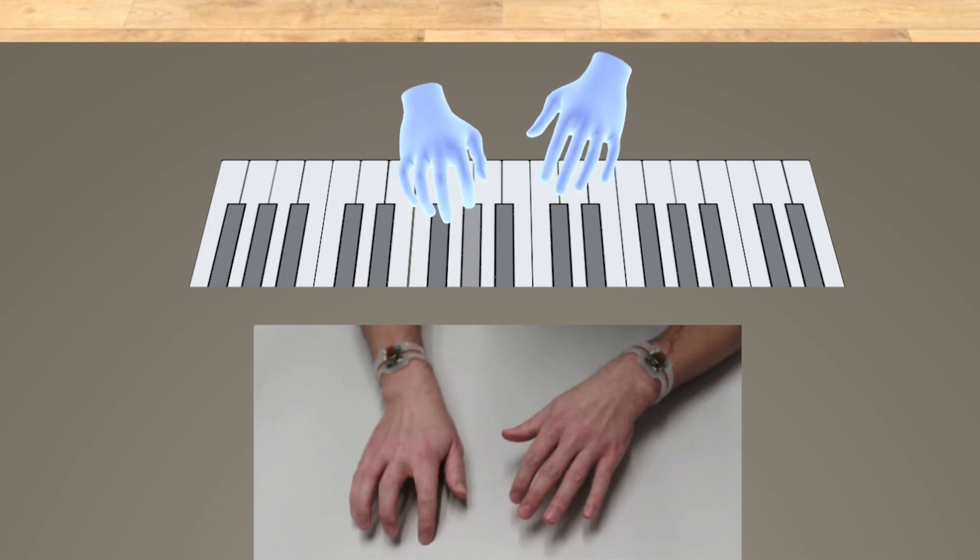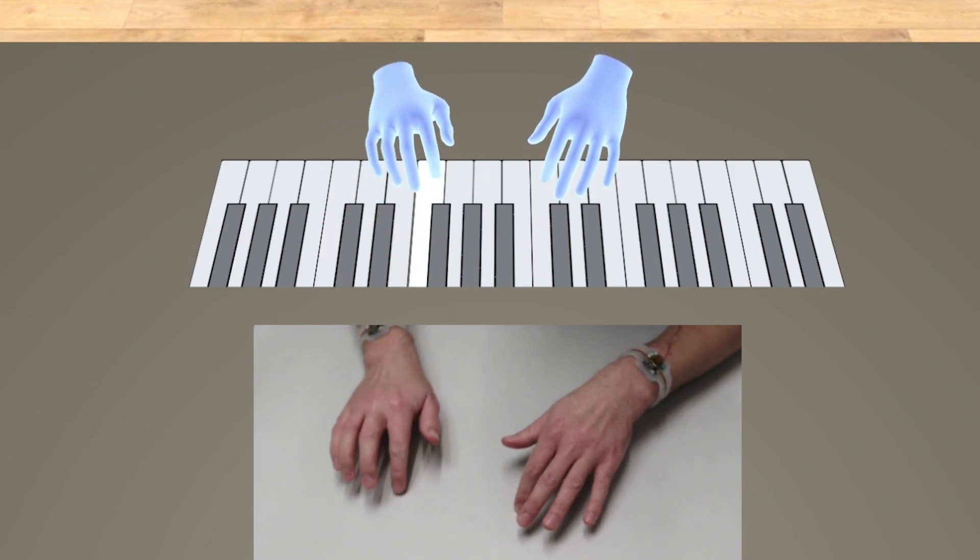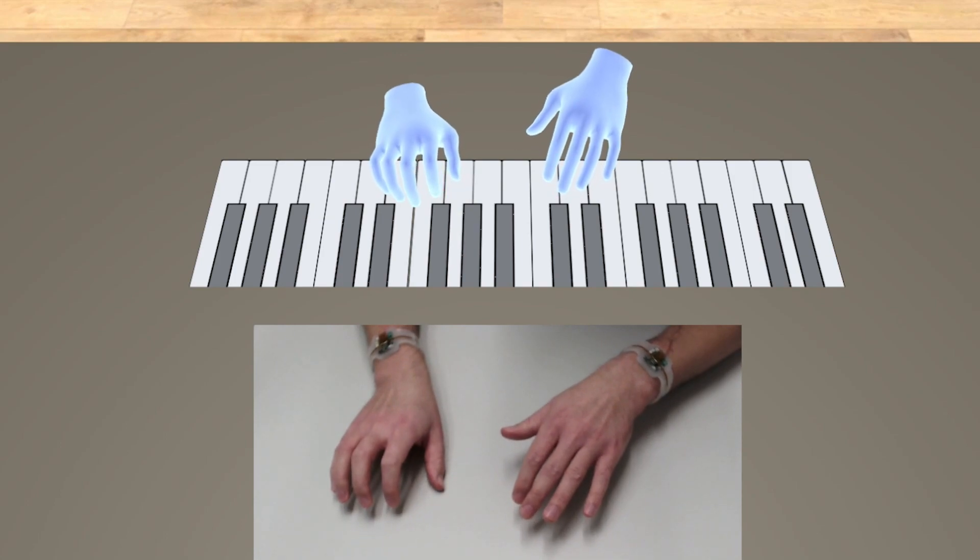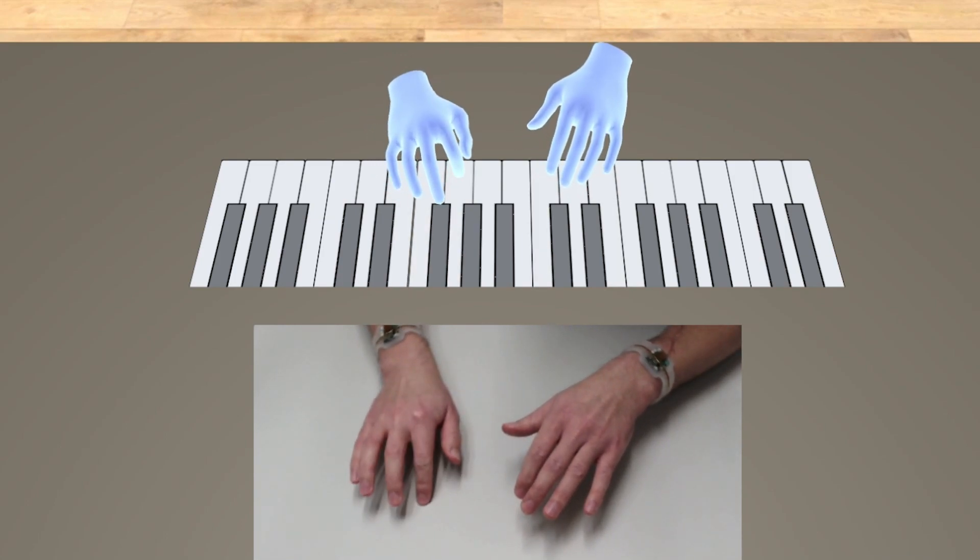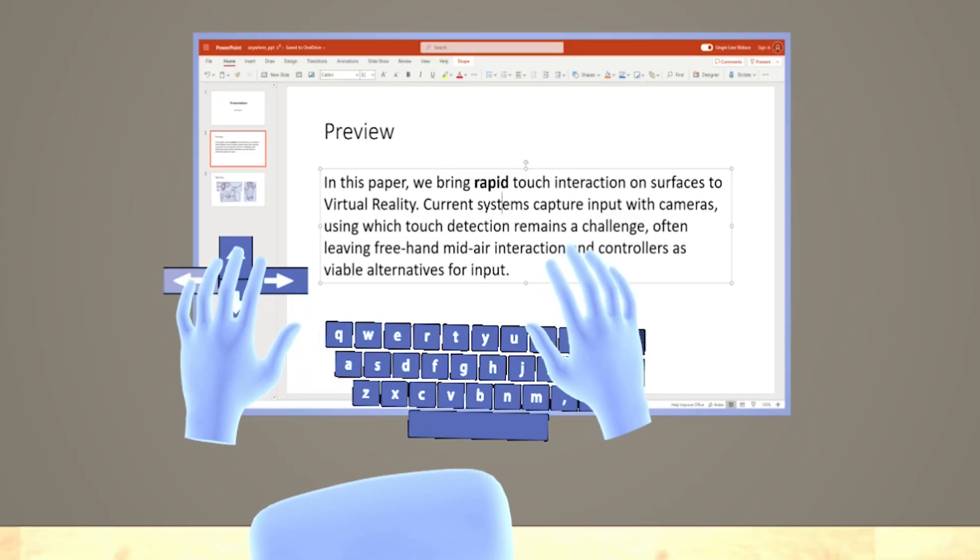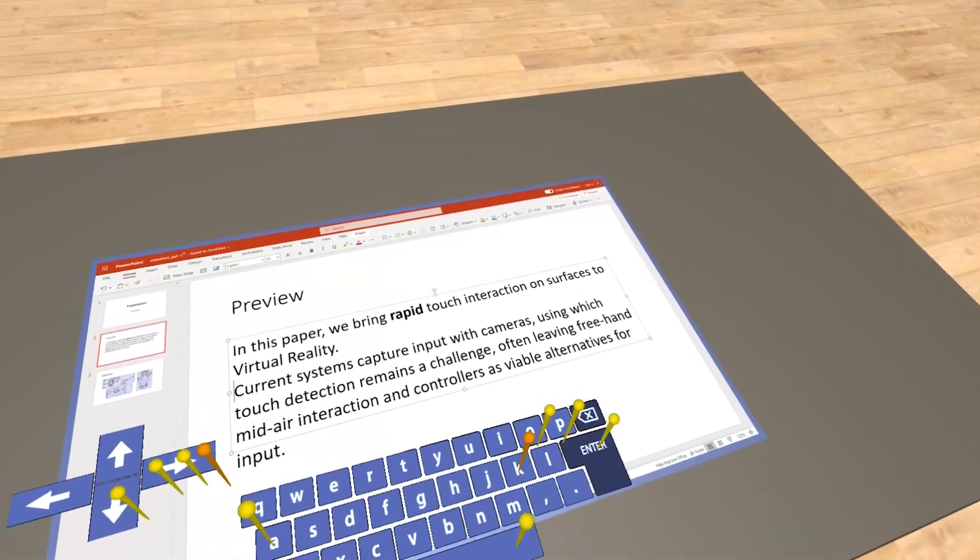TapID brings the familiar modality of bimanual touch interaction to VR using our inexpensive sensing mechanism. TapID seamlessly integrates into existing VR and touch interfaces, enabling prolonged interaction with productivity applications in virtual reality.